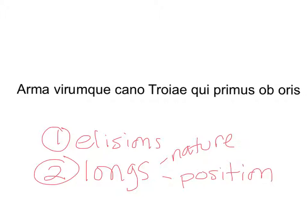Long by position is when any vowel is followed by two true consonants. We learned that a T, D, P, B, G, or C followed by an R or an L does not count as two consonants — just one. That's a stop plus a liquid. An H doesn't count because it's not really a consonant. And QU always comes together — the QU counts as one consonant, so the U does not function as a vowel. It's one consonant sound written as two letters.